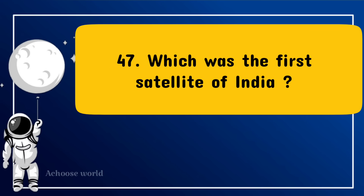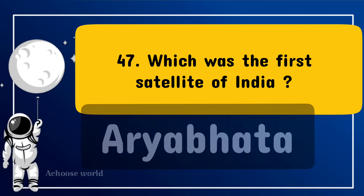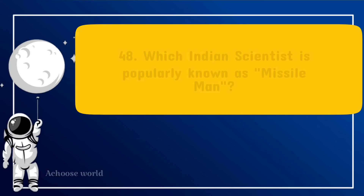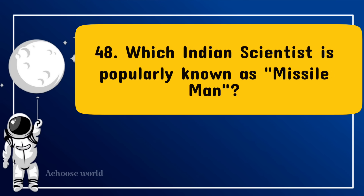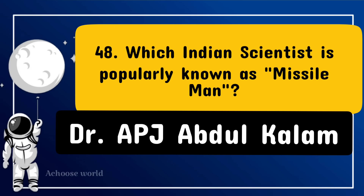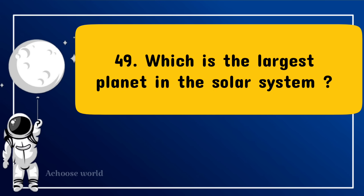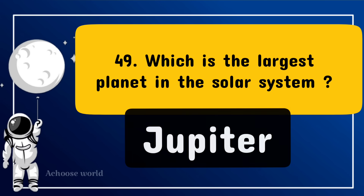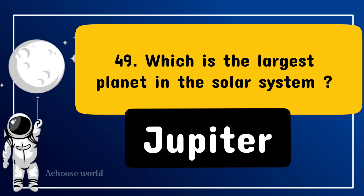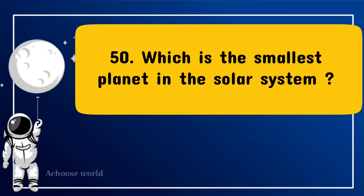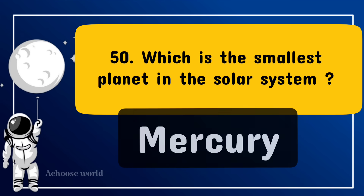Which was the first satellite of India? Aryabhata. Which Indian scientist is popularly known as the Missile Man? Dr. A.P.J. Abdul Kalam. Which is the largest planet in the solar system? Jupiter. Which is the smallest planet in the solar system? Mercury.